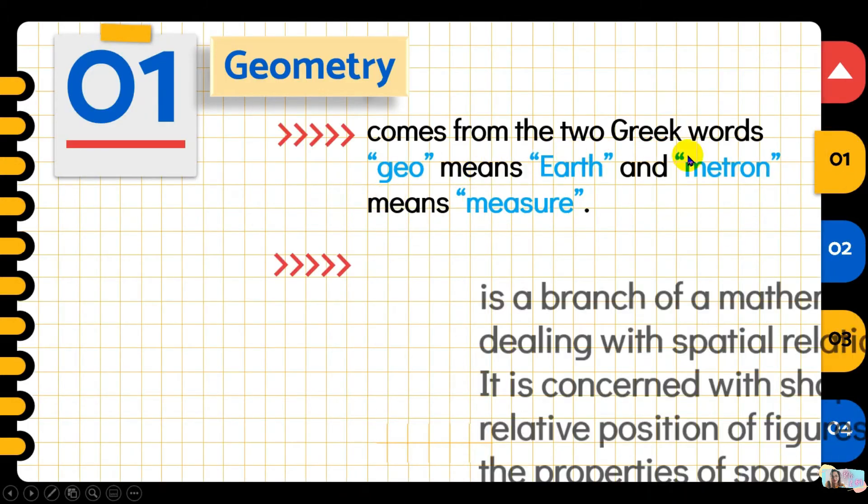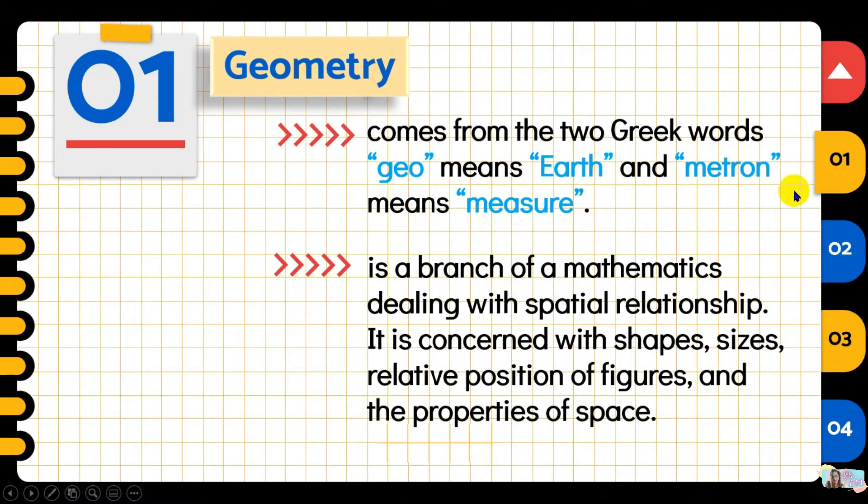Geometry comes from the two Greek words: geo means earth and metron which means measure. It is a branch of mathematics dealing with spatial relationship. It is concerned with shapes, sizes, relative position of figures and the properties of space. That is why when we hear geometry, some things that come to mind are shapes, figures, perimeter, area.